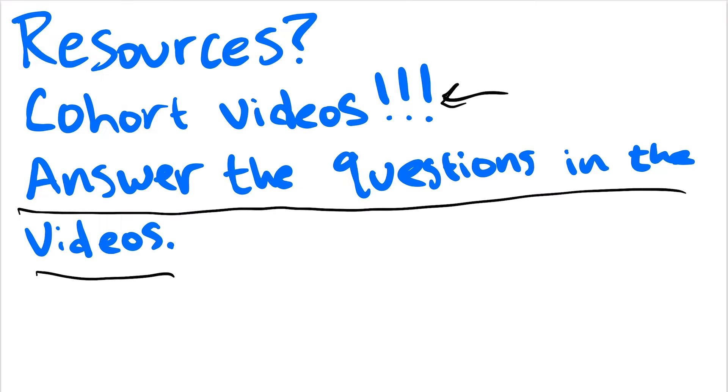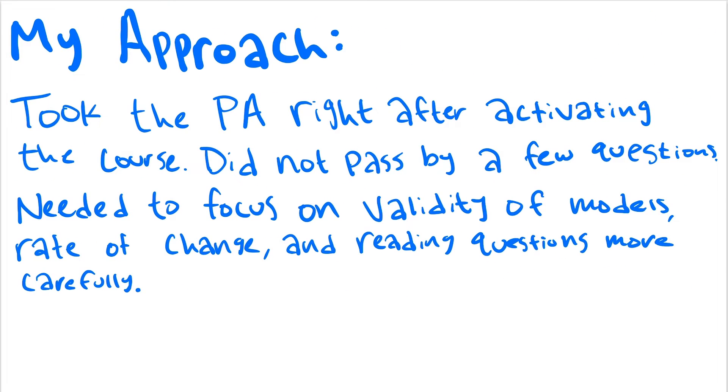My approach: right out the gate I took the PA just to see where I was, and I didn't pass by a few questions. I saw the areas that I needed to focus on, which were validity of models, rate of change, and honestly just reading the questions more carefully. Sometimes I would look at a graph and see what I thought it wanted me to answer when the wording was just a little bit different in the actual question.